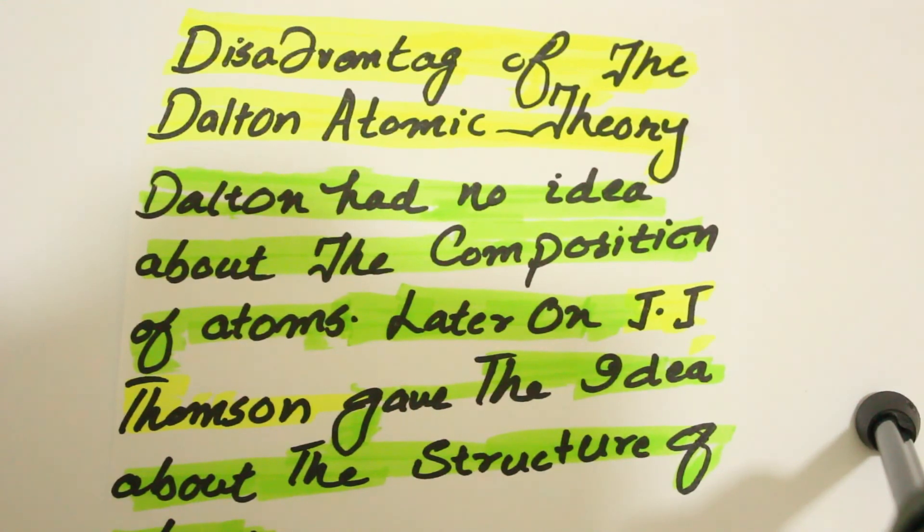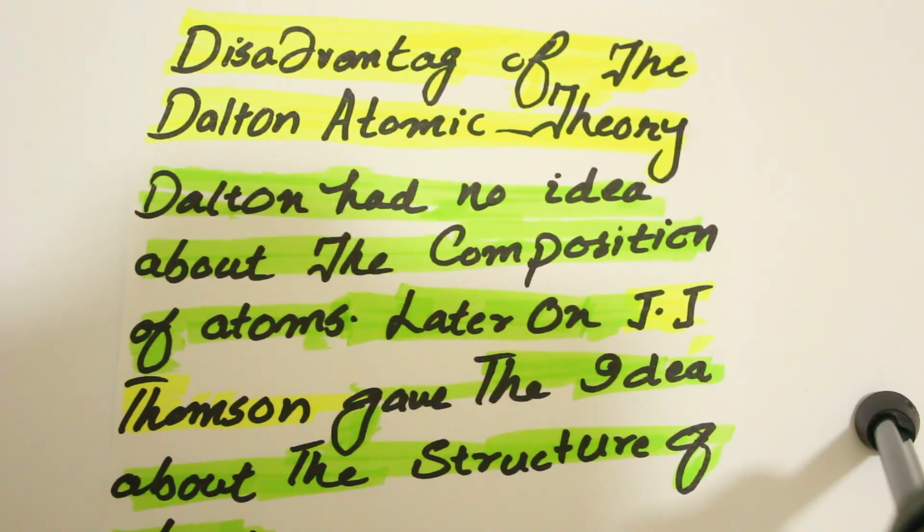The biggest drawback of Dalton's Atomic Theory is that he had no idea about the structure of the atom, but later on JJ Thompson resolved this problem.